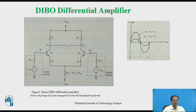This figure shows the circuit diagram for the dual input balanced output differential amplifier, considering the two input signals VIN1 and VIN2. RIN1 and RIN2 stand for the internal resistance of the signal source, that is, the source resistance. VIN1 is applied to the base of transistor Q1 and VIN2 is applied to the base of transistor Q2. The base terminals of the transistors act as input terminals for this differential amplifier, and the output is taken between the collectors of the two transistors Q1 and Q2.